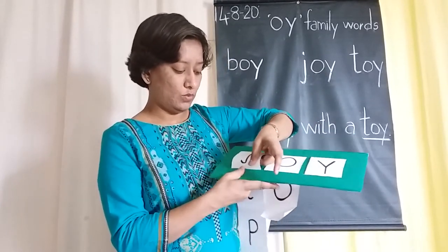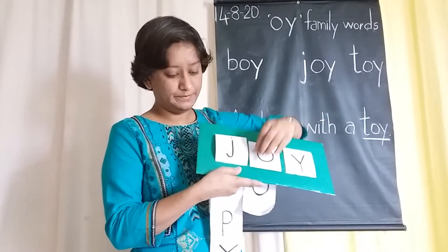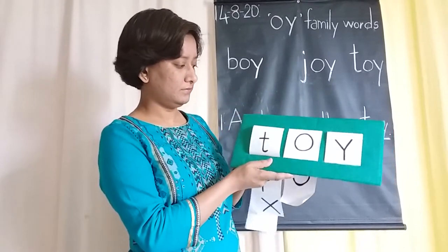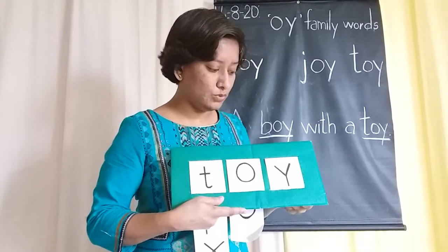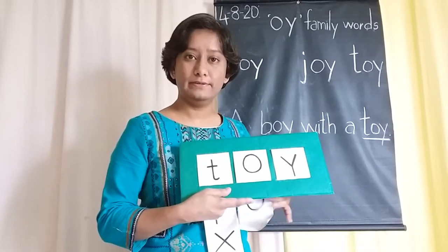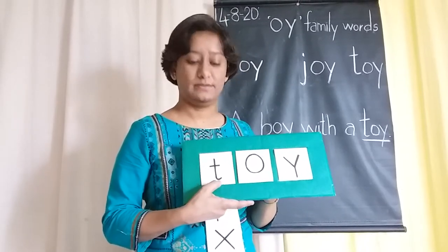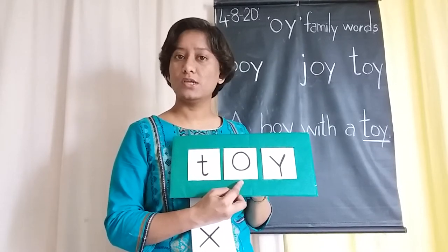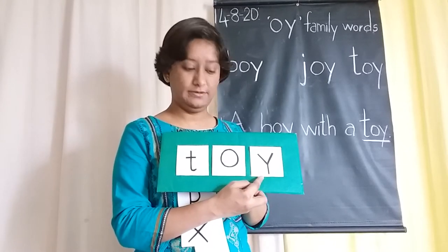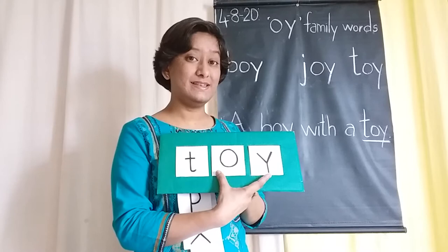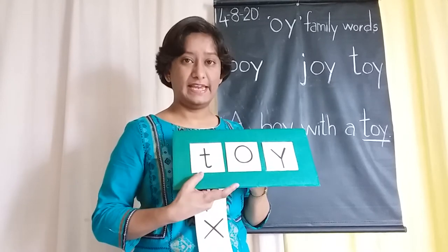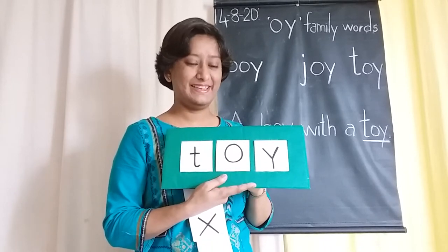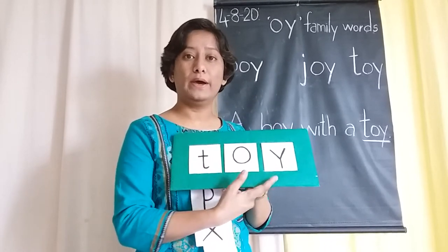Let's make one more new word. This time I'm going to add letter T. T says T. O says AW, Y says Y. O and Y come together and say OI — and T: TOY. Don't you have many toys to play? That's the word T-O-Y, TOY.